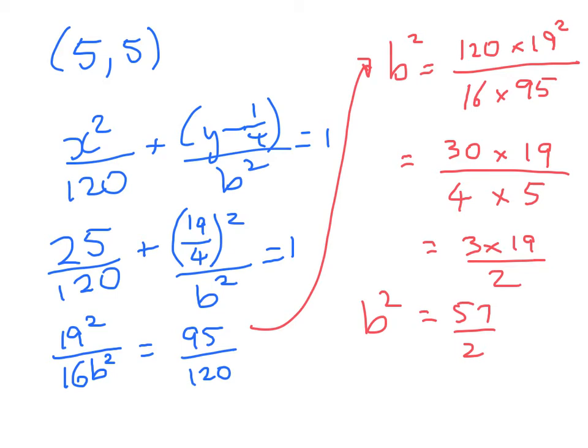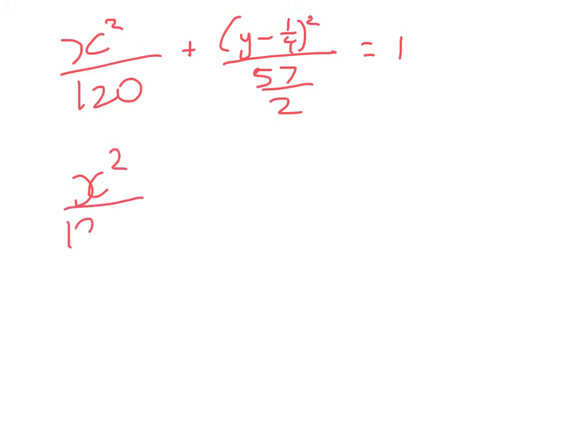Now that's not very nice, but never mind, that's what our equation is. So now we're good to go. So we've got x squared over 120 plus y minus 1 quarter squared over 57 over 2 equals 1. Now we can't leave it like that. That just looks horrible. So x squared over 120 plus 2 times that over 57 equals 1.